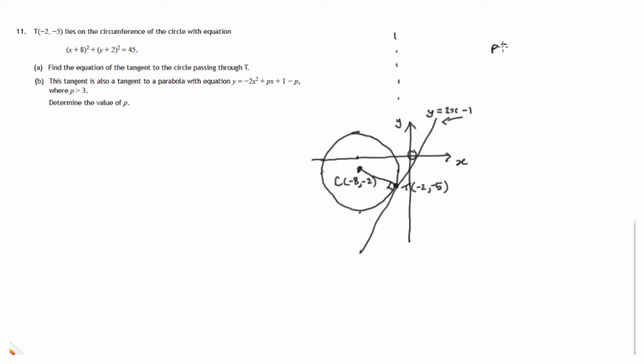For instance, if p was equal to 1, then the parabola would be y = -2x² + x. If p was 2, for instance, then y = -2x² + 2x - 1. That's a completely different parabola. So we're dealing here with a whole family of parabolas. One of them, or several of them, might be a tangent to this straight line.